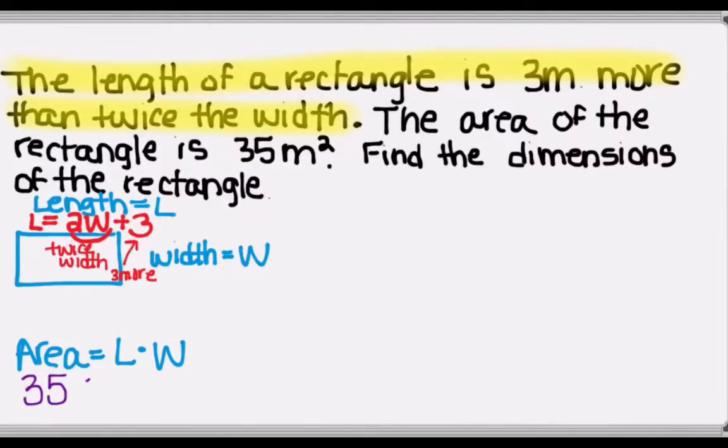And now that we have length written in terms of W, we can fill in the formula for area just with one variable. And so we get 35, which is the area, is equal to, and instead of L for length, I'm going to put in 2W plus 3 times W.